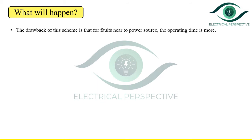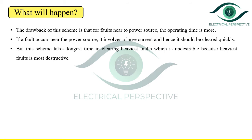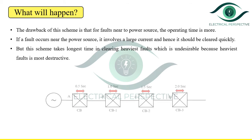An important drawback of this scheme is that for a fault near the power source, the operating time is more. If the fault occurs nearer to the source, it involves a large current and hence should be cleared quickly. But this scheme takes the longest time in clearing the heaviest fault, which is undesirable because the heaviest fault is the most destructive.